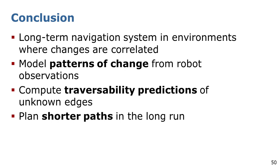To sum up, we propose a new system for long-term robot navigation in indoor environments where changes happen following repetitive patterns. We achieve this by modeling these patterns from the robot observations. We use the model to predict the traversability at unknown locations, and exploit the predictions to plan paths that lead the robot to navigate along shorter paths in the long run. Thank you for your attention.